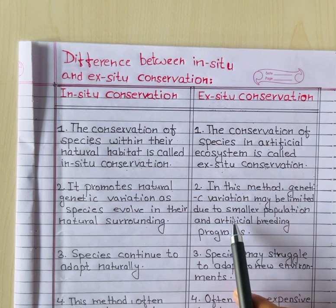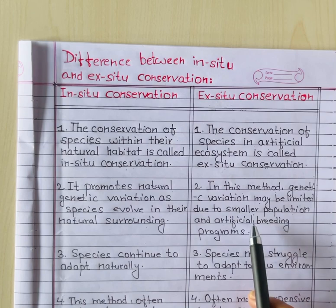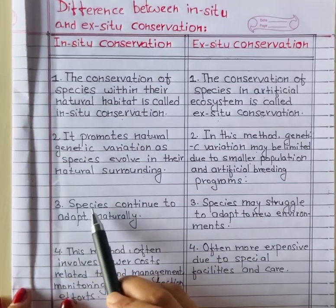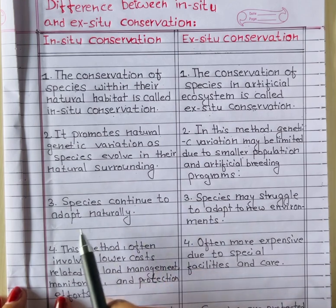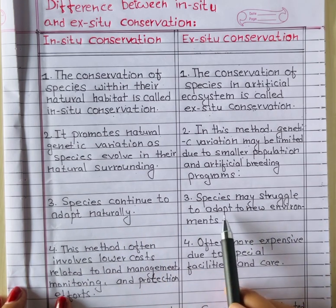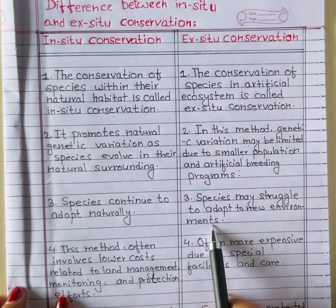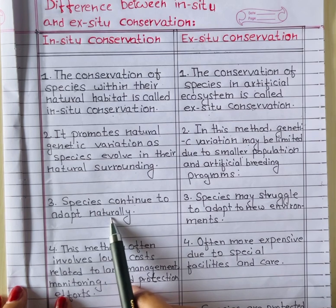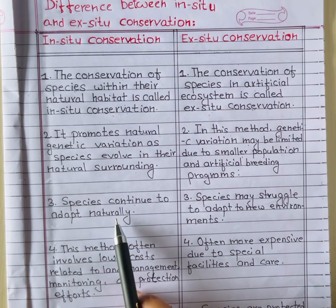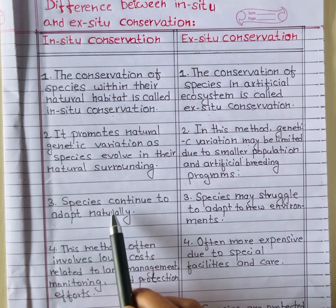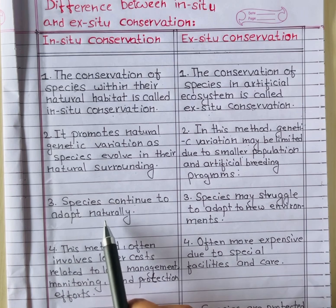This is because ex-situ conservation involves small populations and artificial breeding programs. Third point: in in-situ conservation, species continue to adapt naturally. In ex-situ conservation, species may struggle to adapt to new environments, as they are not in the habitat where they were born and naturally survive.